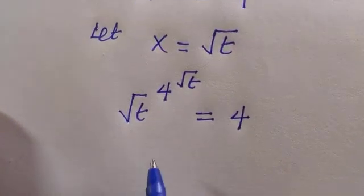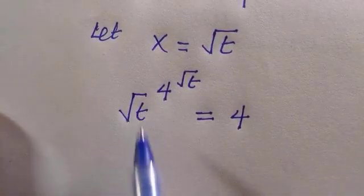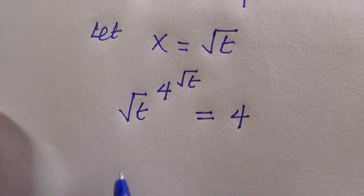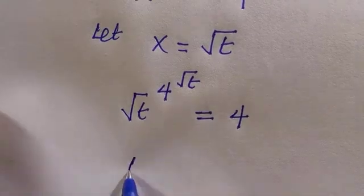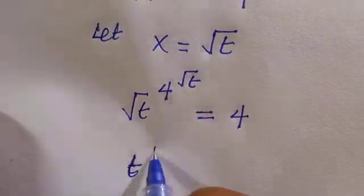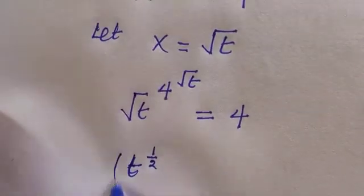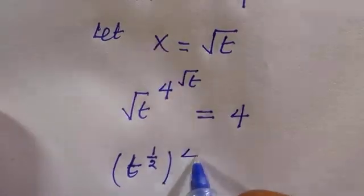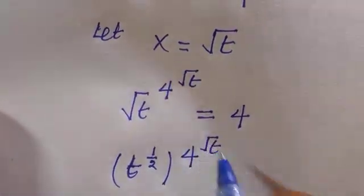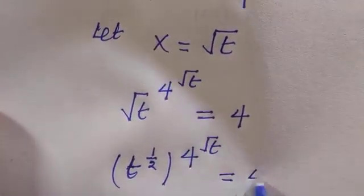And we know that the root is just like power of half on the base which is t. Then we have t to the power of 1 over 2, all raised to power of 4, raised to root t, equals 4.